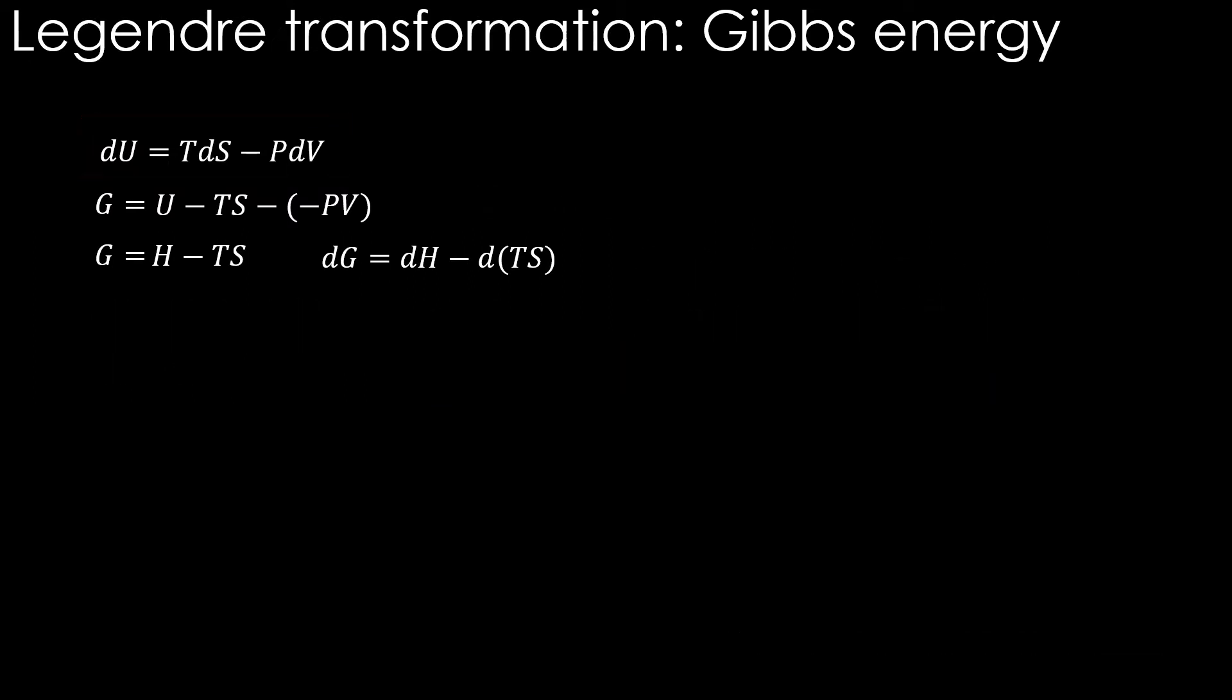Now let's start from this step of the same derivation. We can write dG is equal to dH minus TdS minus SdT. Now consider constant temperature scenario, also called as isothermal condition. dG is equal to dH minus TdS. This is one of the most widely used expressions to calculate Gibbs energy change.